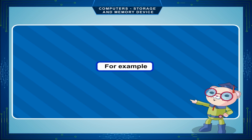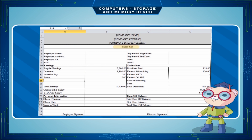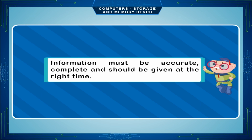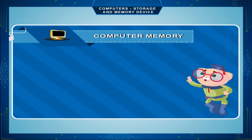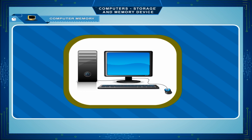For example, the address of employees, their pay slips, etc. Information must be accurate, complete, and should be given at the right time.